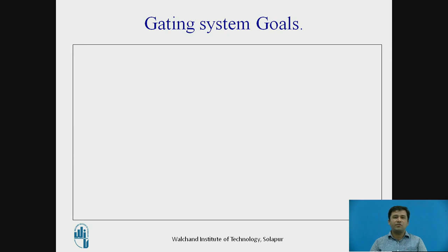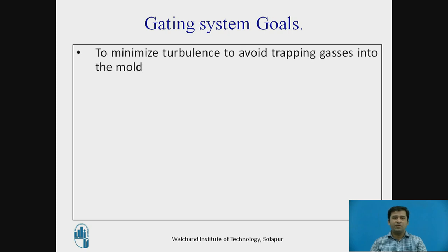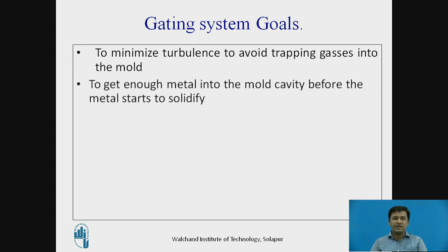Now we'll look at the major goals of the gating system. The first important goal is to minimize turbulence and avoid trapping gases into the mold. As we know, when molten metal starts flowing it has significant turbulence. With a proper gating system, turbulence can be reduced, and gases can be removed — otherwise these gases will create a large number of defects, leading to scrapped or reworked castings.